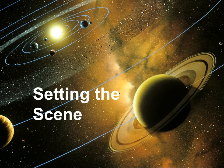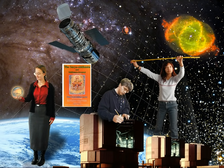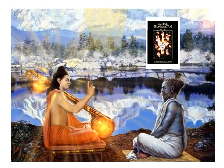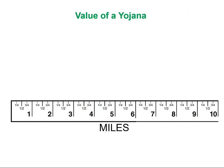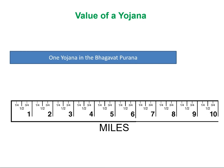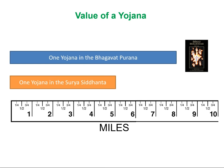Now, let's set the scene. The Siddhanta itself has more in common with perhaps the more mechanistic way of looking at and measuring the universe. However, the fifth canto of the Bhagavat Purana represents the universe perhaps as seen by celestially and spiritually advanced beings. A yojana is a measurement of distance, and its value differs between texts. One yojana in the Bhagavat Purana is about eight miles, whereas according to calculations, one yojana in the Siddhanta is about five miles.